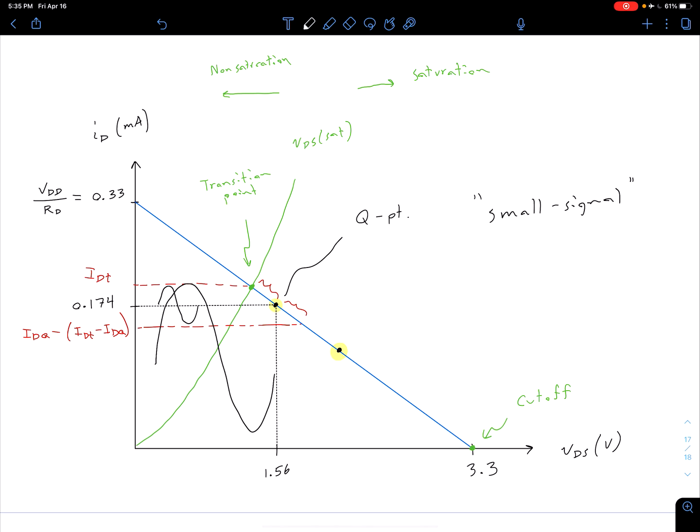once we get some really large, relatively large input signal, we're not going to have that this small signal approximation is true, and ultimately, we're going to have nonlinear effects anyway. So something to keep in mind as you're thinking about this maximum symmetrical output voltage swing.